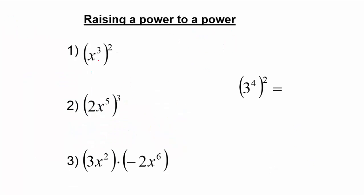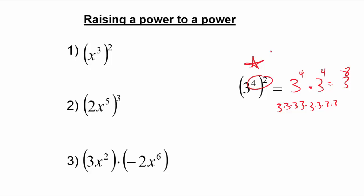If I raise a power to a power — let's start with the number example: 3 to the fourth squared — that's like multiplying it by itself twice. There are four 3s being multiplied together in the first group and four more 3s in the second, giving eight 3s total. The shortcut is 4 times 2, and for the variable problem that gives us x to the sixth.